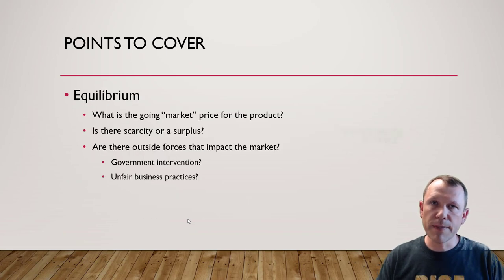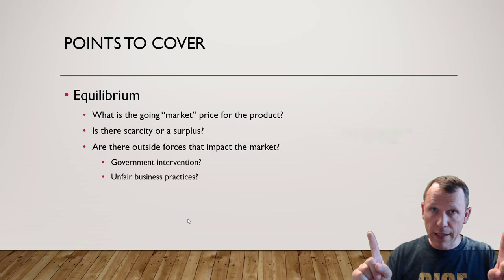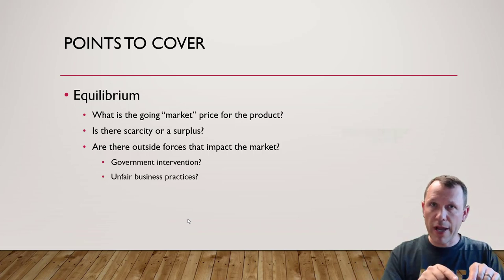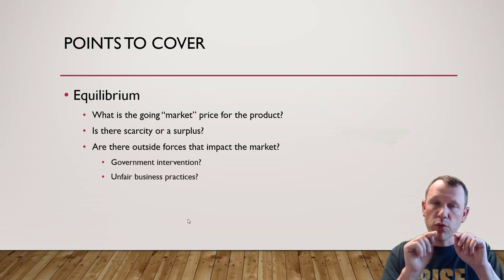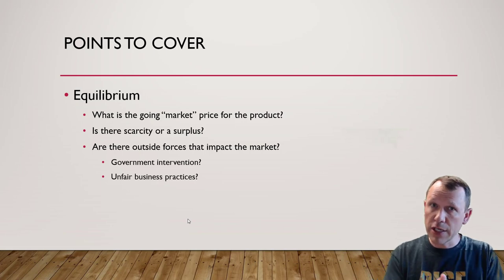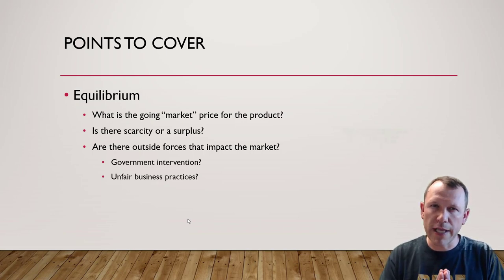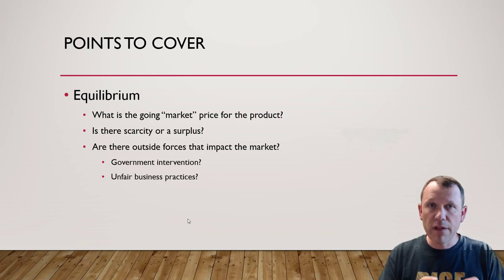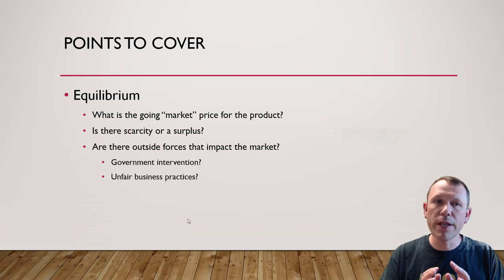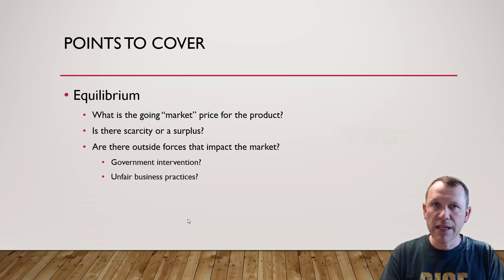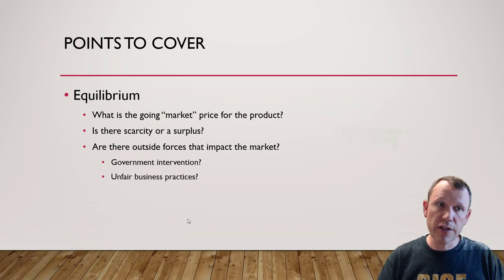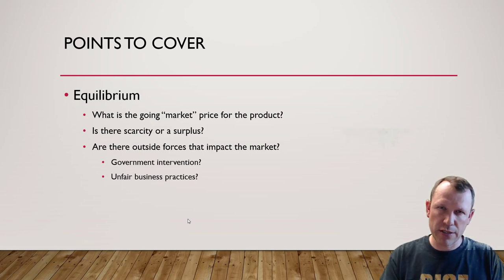Next we're going to talk about equilibrium — specifically the equilibrium price and the equilibrium quantity. If this is a free market, and we're not dealing with a command system, equilibrium is where the market is going to go if there's no government intervention. So define what equilibrium looks like in your market. Is your market at equilibrium? Most likely it will be. You can define equilibrium by looking at the current going market price for the product — is it changing? Is the quantity in the market changing?